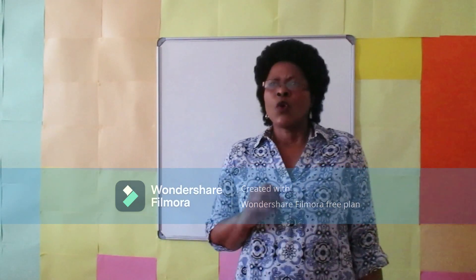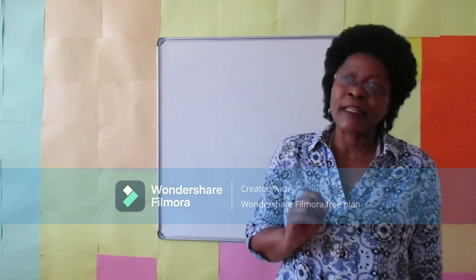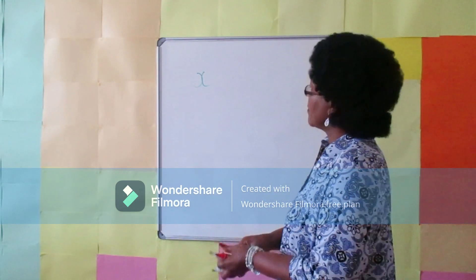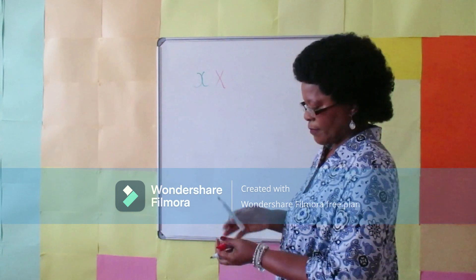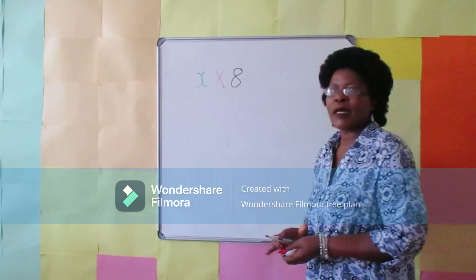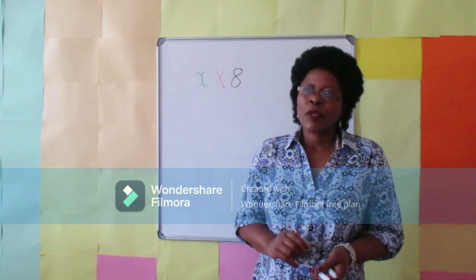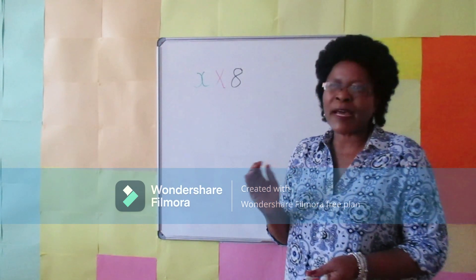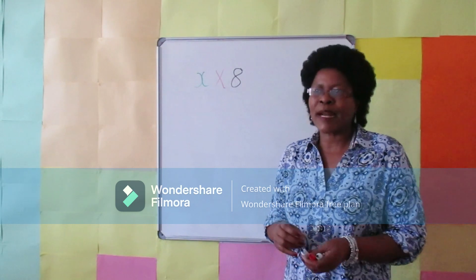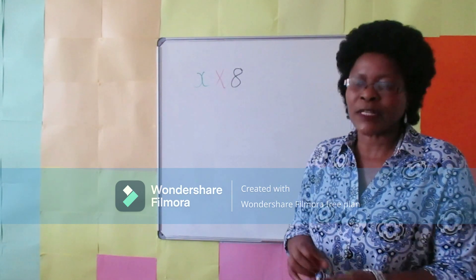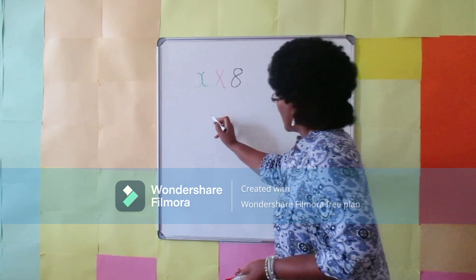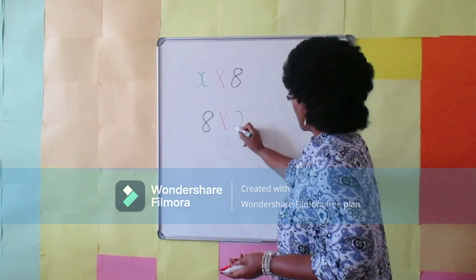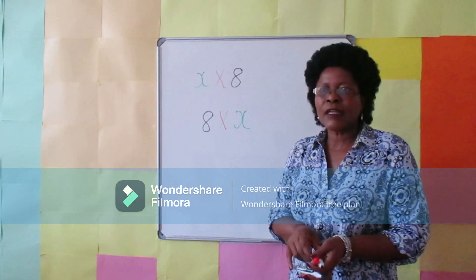Another example would be the product of a number and eight. Let's look at this: variable, product, constant number eight. Take note of the following — when multiplying numbers and variables, it is not necessary to separate numbers and variables with brackets or a multiplication sign. For example, eight multiplied by x can be written as follows.